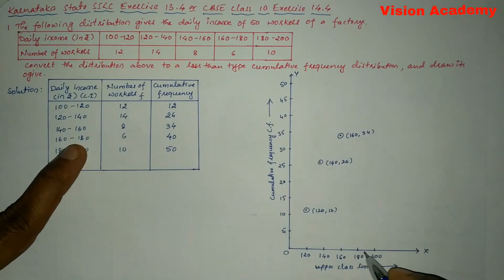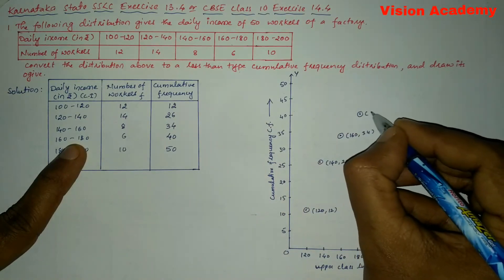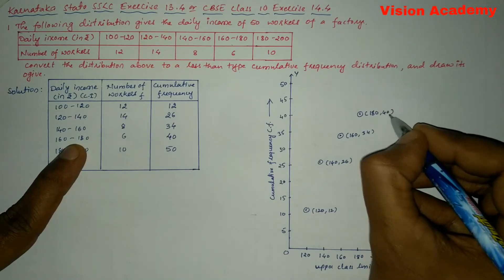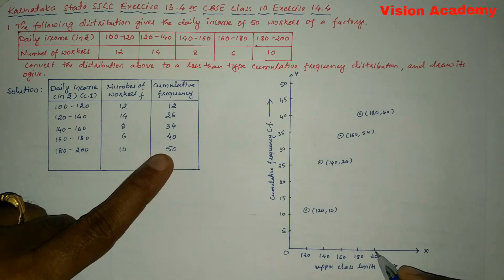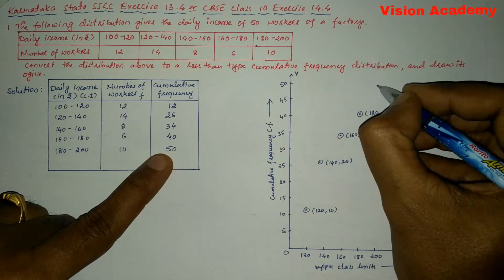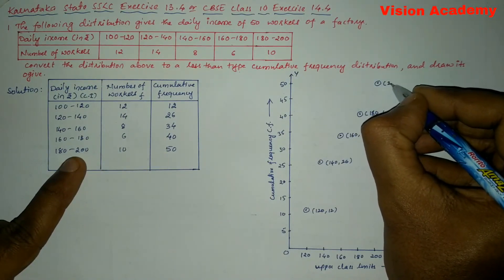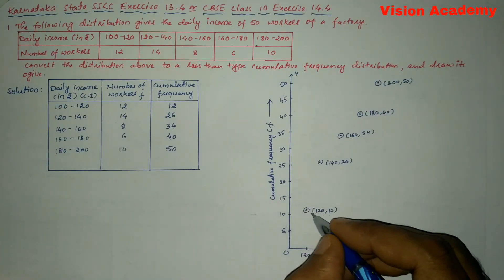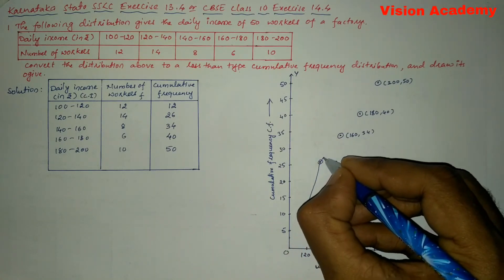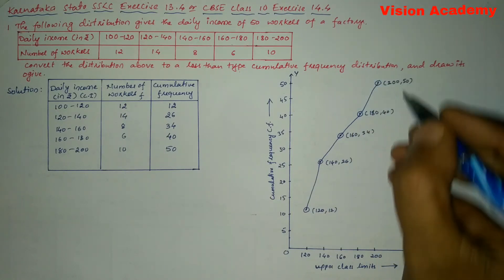Next, 180 on the X-axis and 40 on the Y-axis, giving coordinates (180, 40). Then 200 on the X-axis and 50 on the Y-axis, giving coordinates (200, 50). Now let us join all of these points together — that forms the ogive of the given data.